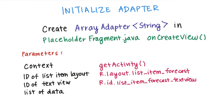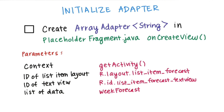And lastly, we pass in weekForecast, which is the array list of forecast data that we defined earlier. Now go ahead and initialize your adapter. Check this box when you're done.